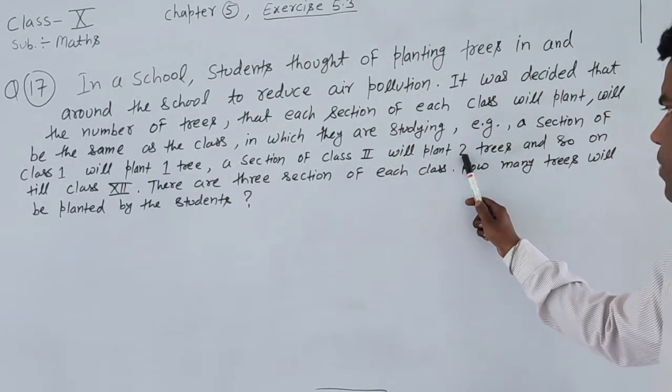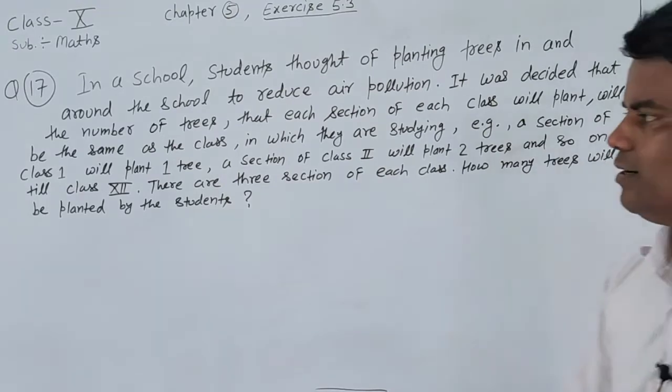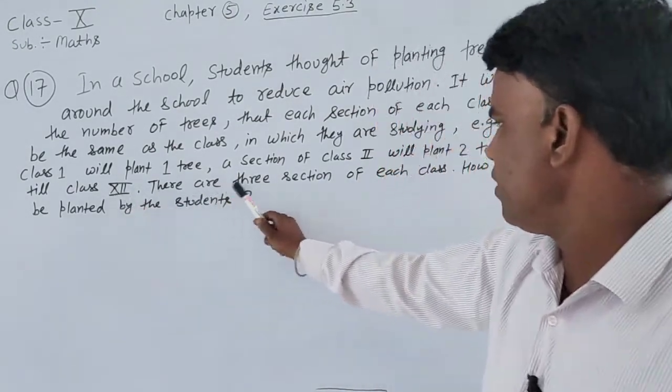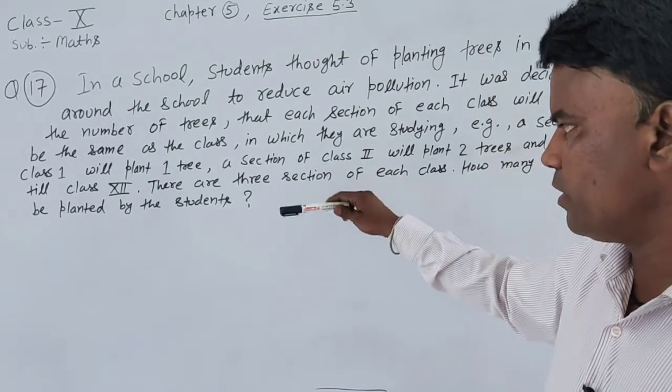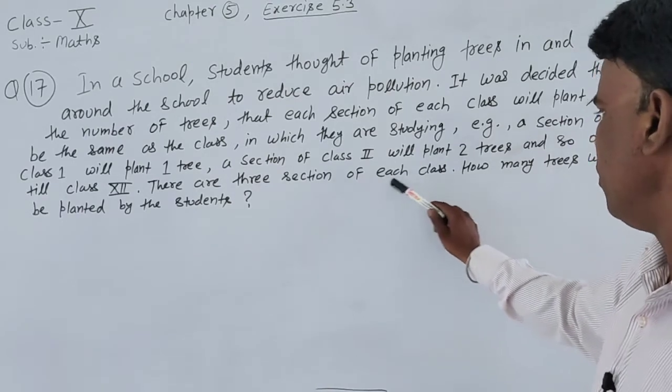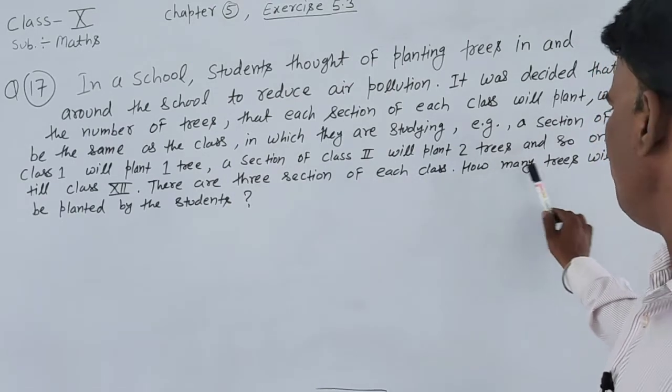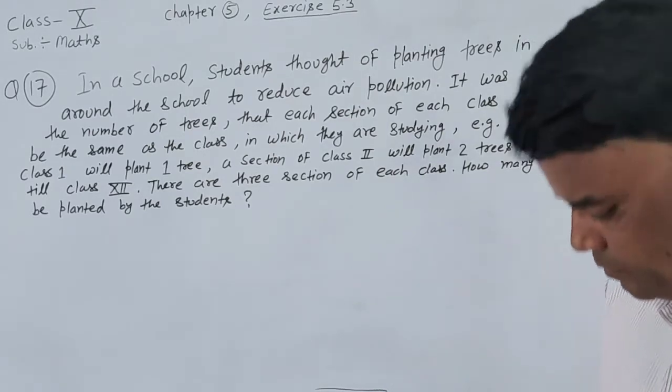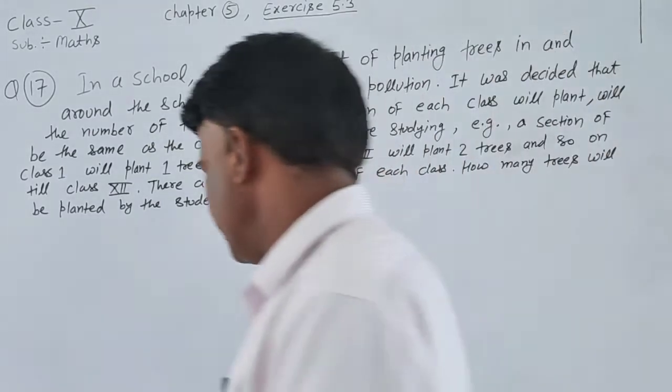Class 2 will plant 2 trees, and so on till class 12. There are 3 sections of each class. How many trees will be planted by the students in total?